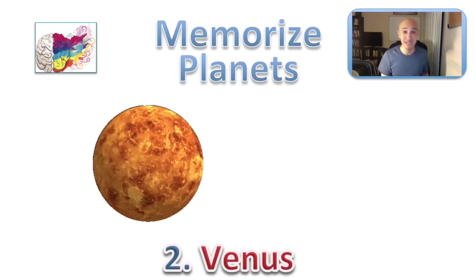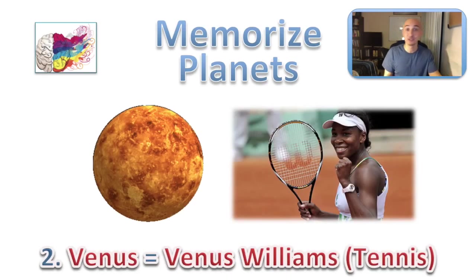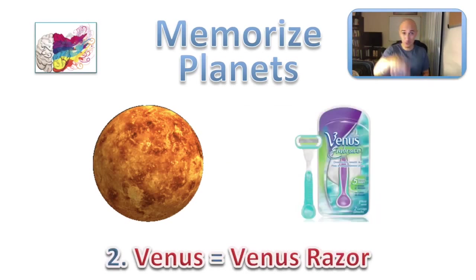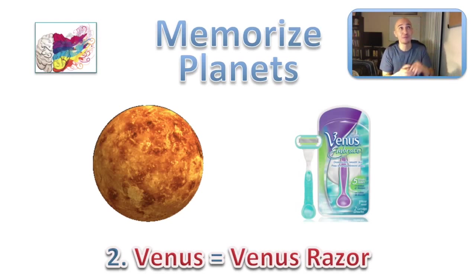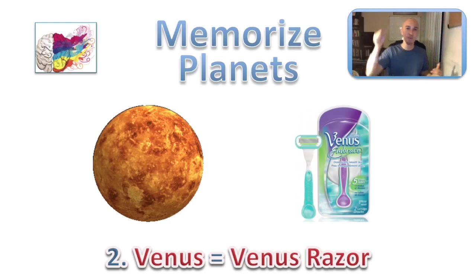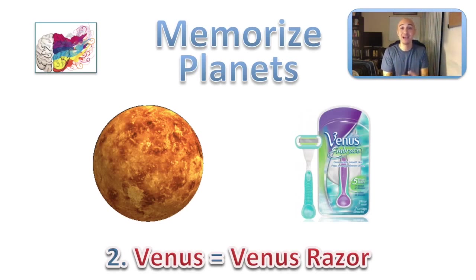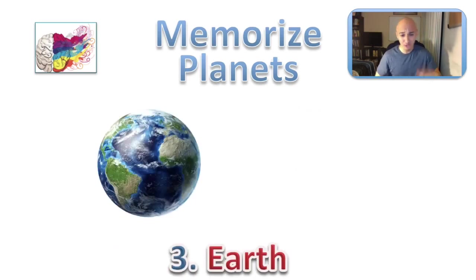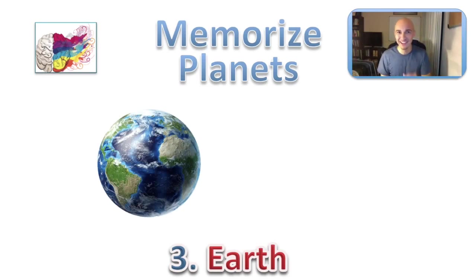The second planet is Venus. For Venus, I picture Venus Williams the tennis player, or you can picture the Venus razor for ladies. On your second location — for me it's a painting — maybe picture the painting showing a girl playing tennis back and forth: boom, bam, boom, bam. Make it weird and vivid. Add Venus to that second location, whether it's a razor or a tennis player.